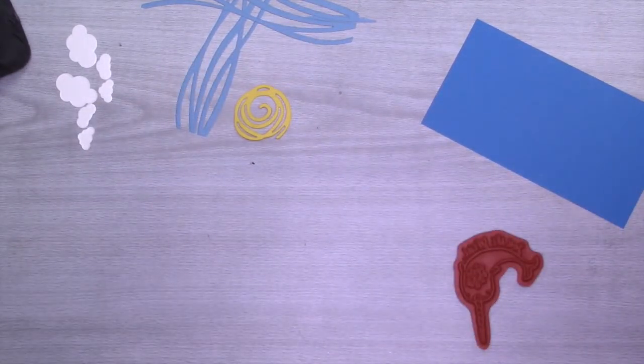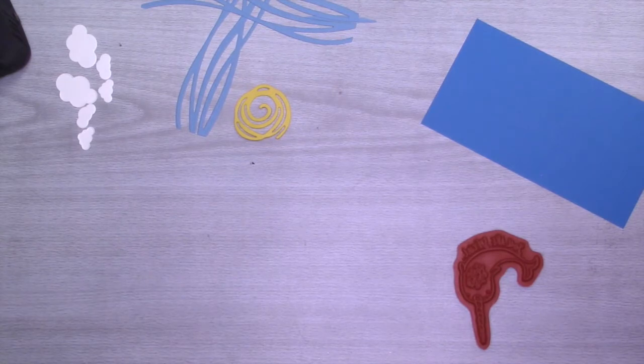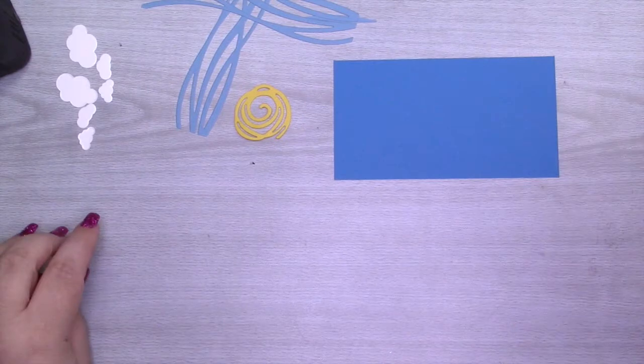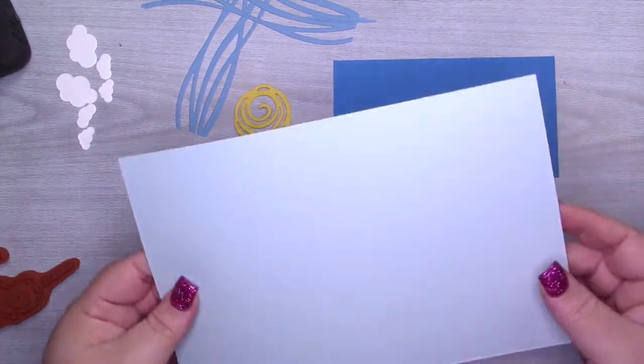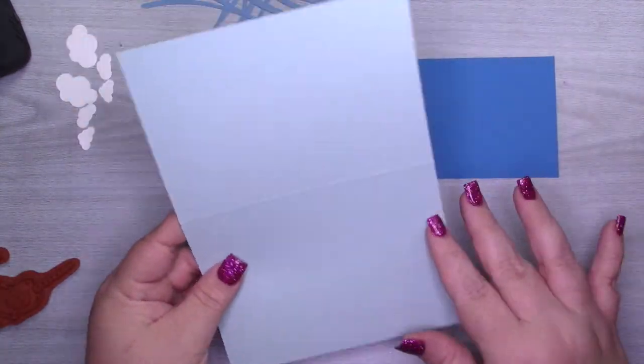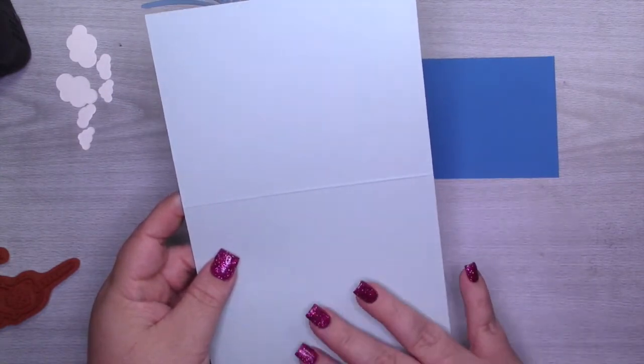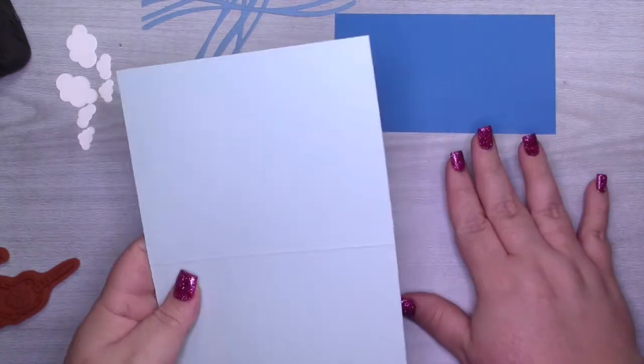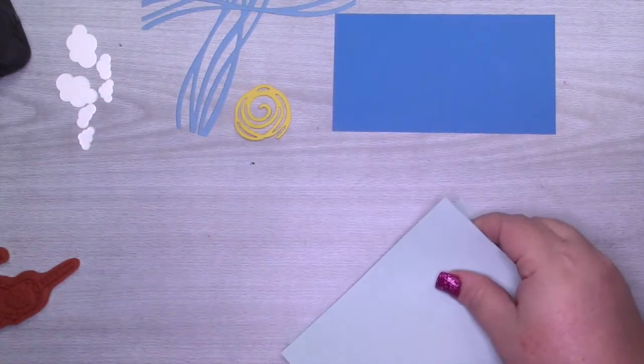I'm going to start by assembling the card because that's honestly going to be the hardest part. I have a card base which is Soft Sky that measured five and a half by eight and a half and I cut it at five and a half, scored it at four and a quarter. So eight and a half by eleven, cut at five and a half, scored at four and a quarter.